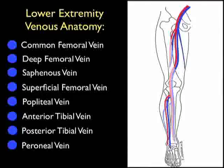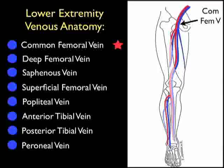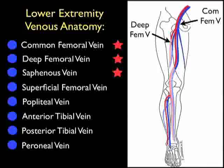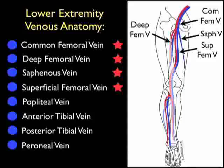Let's now review the lower extremity venous anatomy integral to performance of the focused DVT examination. We begin by identifying the common femoral vein, seen just below the inguinal ligament, just medial to the common femoral artery. The common femoral vein continues down the leg to bifurcate into the deep and superficial femoral veins. We note the deep femoral vein coursing to the back of the leg and the adjacent deep femoral artery. We also see the saphenous vein which joins into the common femoral vein above the level of bifurcation. The superficial femoral vein is the vein that continues down the leg to become the popliteal vein behind the knee, accompanied by the paired superficial femoral artery.